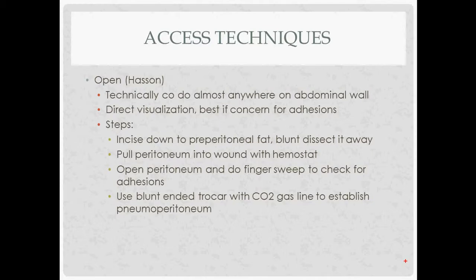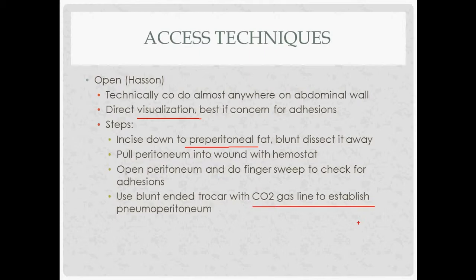Abdominal access techniques. The open technique, also called Hassan's technique, can be done pretty much anywhere in the abdominal wall under direct visualization — you watch the layers as you cut down. This is best when you're worried about adhesions underneath. The steps: incise down to the preperitoneal fat, blunt dissect the preperitoneal fat away, grab the peritoneum, pull it up into the wound with a hemostat, make a small hole in the peritoneum, put your finger in, sweep around to check for adhesions, then place the trocar with the CO2 line and establish pneumoperitoneum.